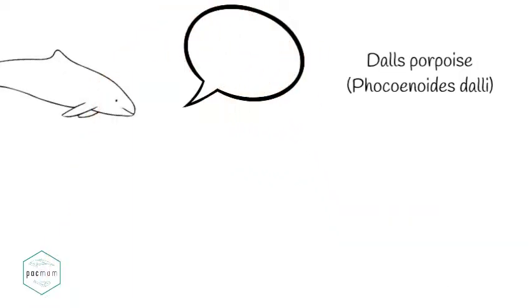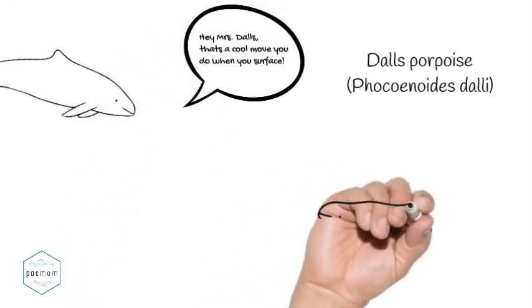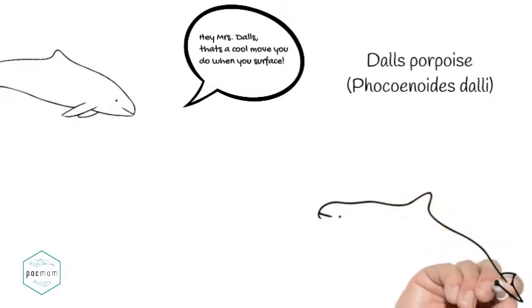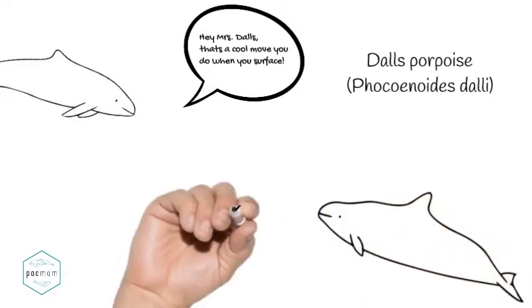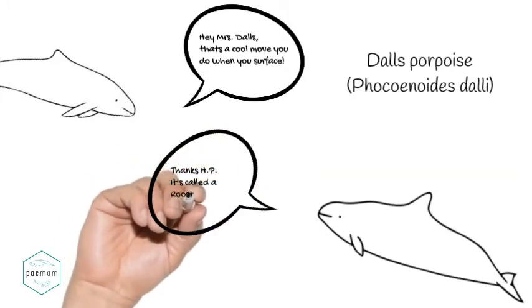The Dall's porpoise measures 7 to 8 feet, weighing up to 440 pounds, and living 15 to 20 years. Due to their black and white coloration, they can be mistaken for baby orcas. They are the fastest swimmers of the cetacean group, reaching up to 34 mph over short distances.